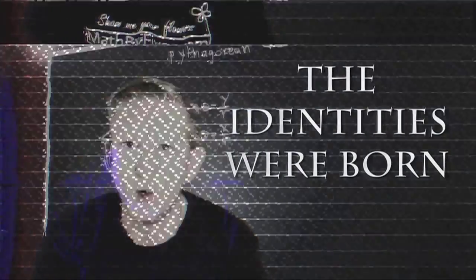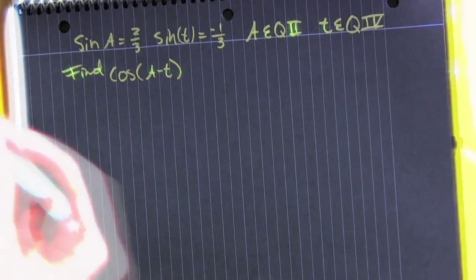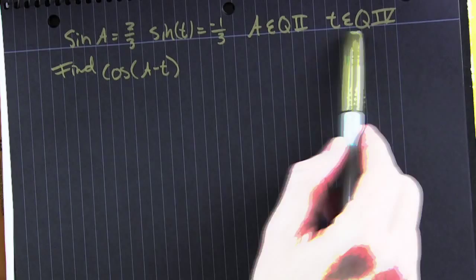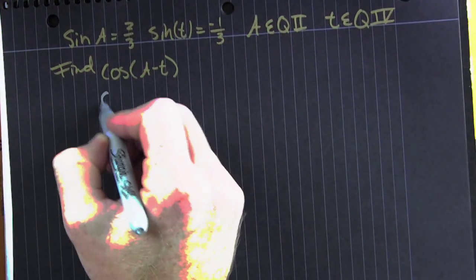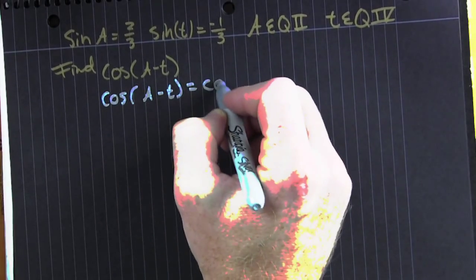And this is where the identities were born. So you're given the sine of A is 2/3, and the sine of t is -1/3. A terminates in quadrant 2, t terminates in quadrant 4, and we want to evaluate the cosine of the difference of two angles.